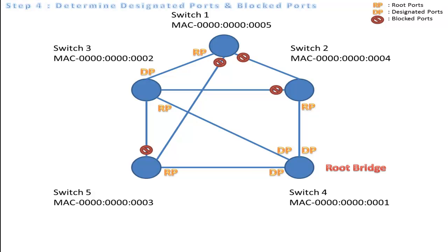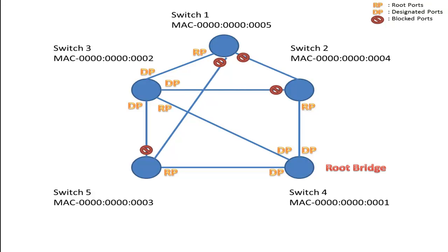Now we pair the blocked ports with designated ports — the blocked port at switch 5, the blocked port at switch 2, and the blocked ports at switch 1. There we go, our spanning tree protocol is now completed.